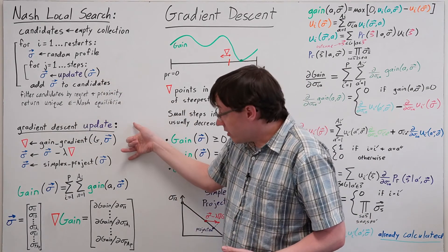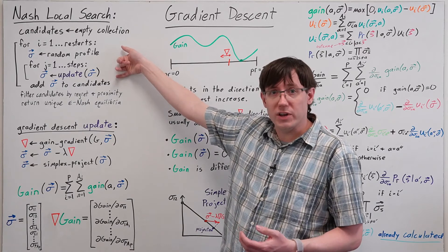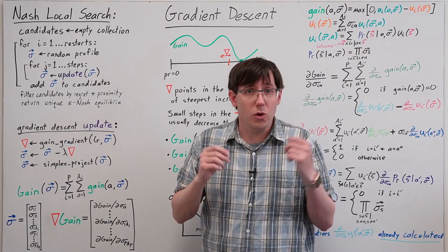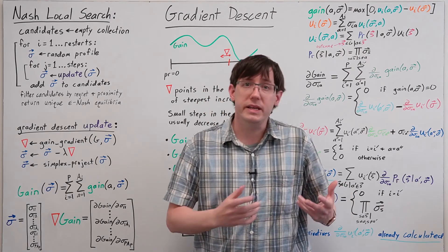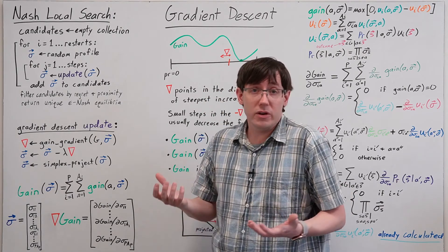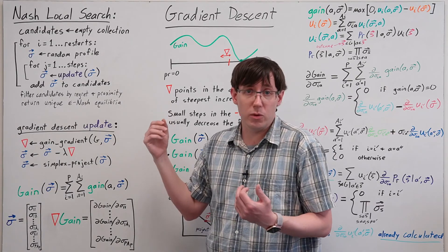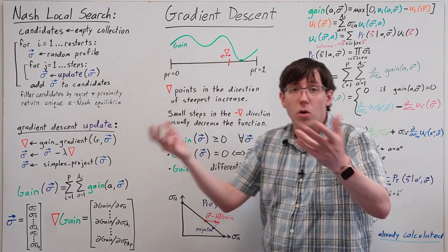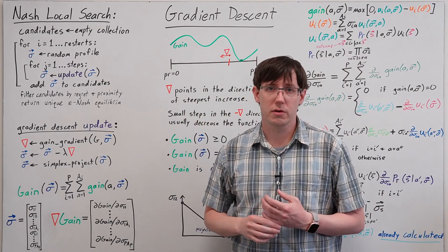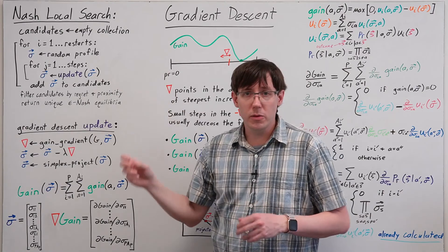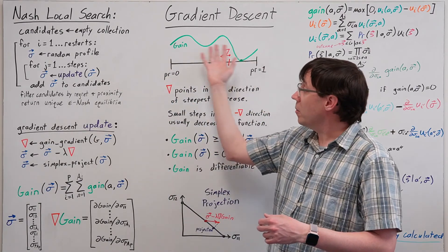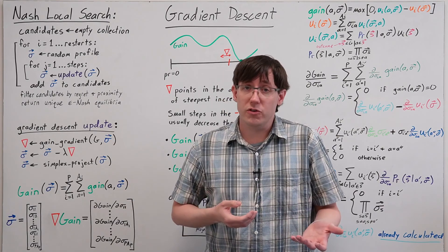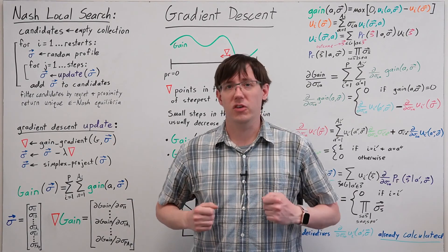Now we can plug this update into our local search algorithm and run it for many iterations. But just like all of our other local searches, gradient descent is not a complete algorithm. It's not guaranteed to find us a Nash equilibrium, since gradient descent will often get stuck in a local minimum or otherwise fail to converge. But just like our other local search algorithms, if we restart it from many different profiles, there's a good chance that at least one of those searches will find an epsilon Nash equilibrium.